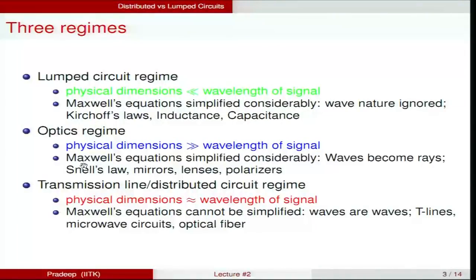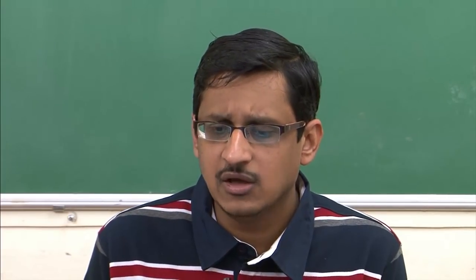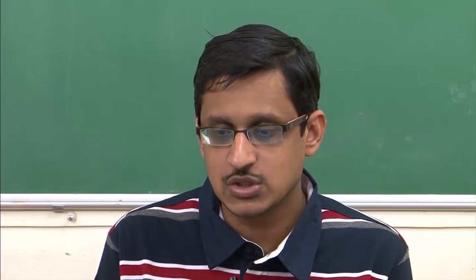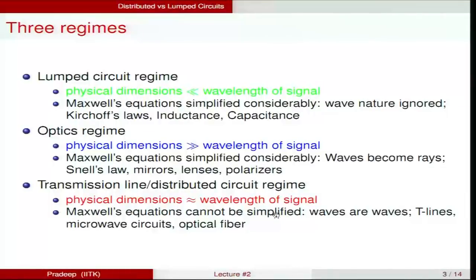In between the lumped circuit and optics regimes is the distributed circuit or transmission line regime. Here, physical dimensions are neither too small nor too large compared to wavelength — they are in fact very close to the wavelength of the signal. At 1 GHz, the wavelength is approximately 0.3 meters (30 cm). A 30–40 cm wire, or even a 15 cm wire, has dimensions very close to the signal wavelength. Maxwell's equations cannot be simplified; the wire must be treated as a transmission line that carries waves. This regime includes transmission lines, optical fiber, and microwave circuits.